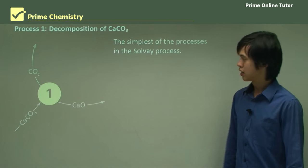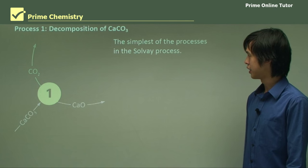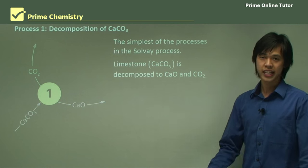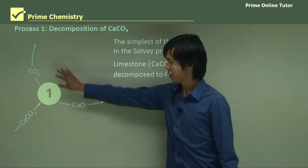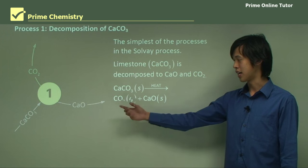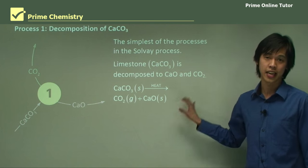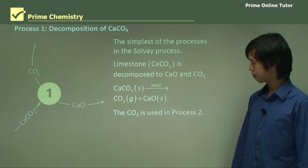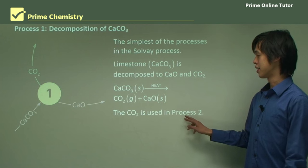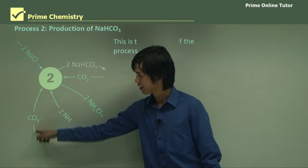We'll now look at it piece by piece, starting with process number one, which is the simplest. We take in limestone, which is calcium carbonate, and we heat it to decompose it into carbon dioxide and calcium oxide: CaCO3 + heat → CO2 + CaO. This reaction is just thermal decomposition — something we learned in year 10 science. The CO2 produced here is used in the next step.